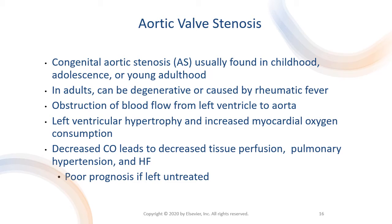Congenital aortic stenosis is generally found in childhood, adolescence, or young adulthood. In older adults, aortic stenosis is a result of rheumatic fever or degeneration. Aortic stenosis is the most frequent degenerative valve disorder, affecting 3% of people over 65 years of age. In rheumatic valve disease, fusion and calcifications cause the valve leaflets to stiffen and retract, resulting in stenosis. Aortic stenosis due to rheumatic disease accompanies mitral valve disease.